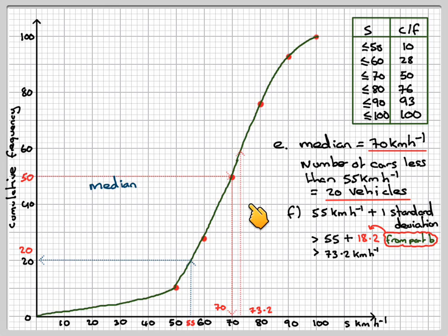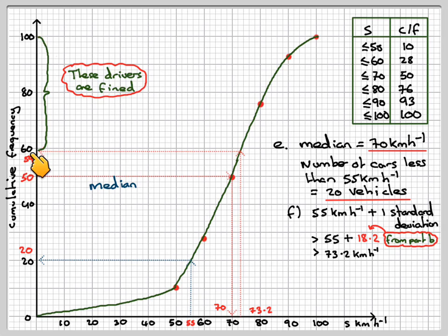And then draw a line upwards. And then read along. And we're going to get 59. So all these cars above here are going to get fined. These drivers are going to get fined. So how many drivers are there here? So it's going to be 100 minus 59. So the number of drivers is going to be 100 minus 59, which is going to be equal to 41 drivers.